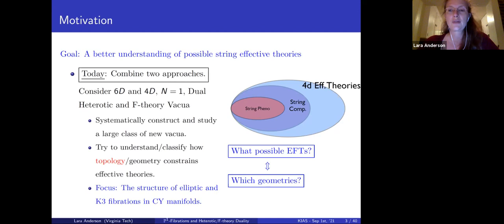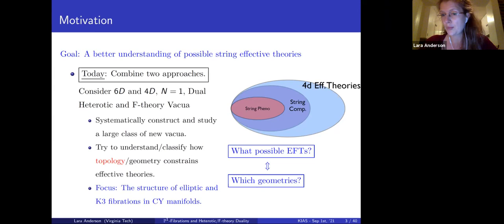The underlying motivation is this Venn diagram: in 4D, what is the space of all possible effective theories, where do string compactifications lie, and what class of field theories are we interested in? Can we characterize the properties or constraints, or perhaps even eliminate the possibility that such theories arise from string theory?